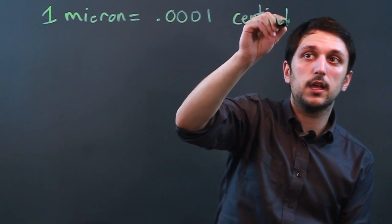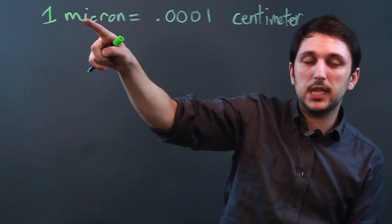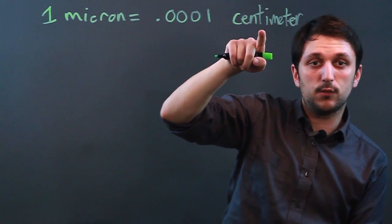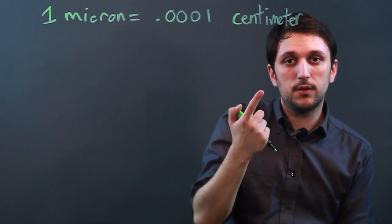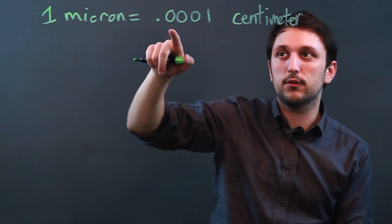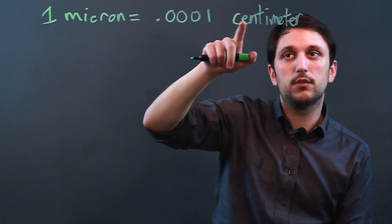Now, the reason for that is, as I said, if this is one millionth of a meter and this is one one hundredth of a meter, well, one million divided by one hundred equals ten thousand. So it's one ten thousandth of a centimeter.